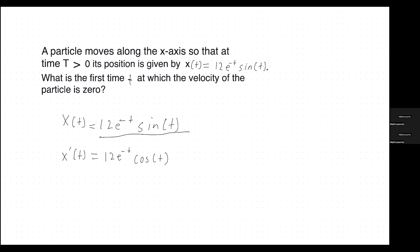With the product rule, you add the derivative of the first part while leaving the second part by itself. Since the derivative of e to the x is e to the x, we keep e to the negative t and just take the derivative of negative t. The derivative of negative t is negative 1, so that gives us negative 12e to the negative t times sine of t.